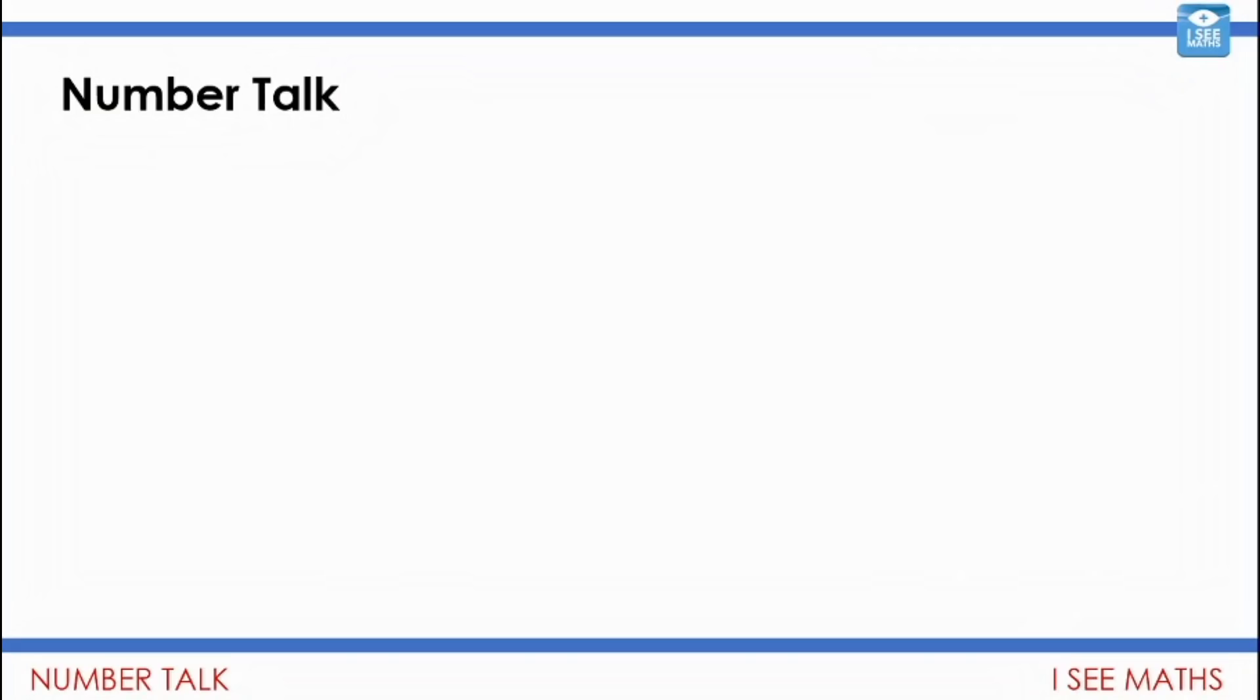Well everyone, we are back and ready to go with a number talk. We're going to have a look at some calculations and how we can play around with the numbers to make them friendlier to calculate with. Let's get started. Have a look at these two addition calculations. I wonder which one you think is easier and which one you think is harder. My guess is you think 30 plus 15, well that one's easier. 28 plus 17, a little bit harder.